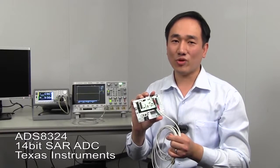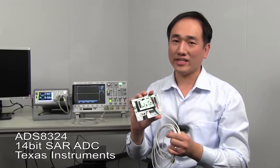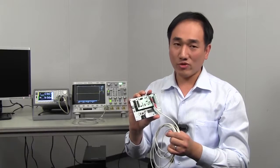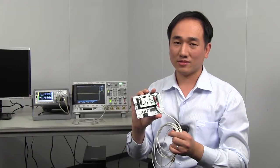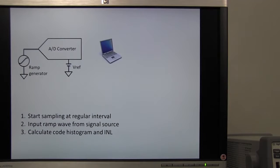ADS-8224 is a 14-bit SAR ADC. This evaluation board has a buffer memory and a USB interface. Next, I'll explain how to measure INL of this ADC.